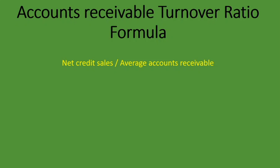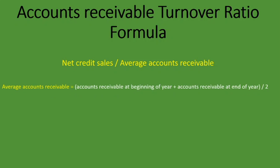Average accounts receivable is accounts receivable at the beginning of the year plus accounts receivable at the end of the year, divided by two. By accounts receivable at the beginning of the year, we are talking about the accounts receivable at the end of the previous year, which is the same as accounts receivable at the beginning of this year. We'll go into the example and you'll see how that works.